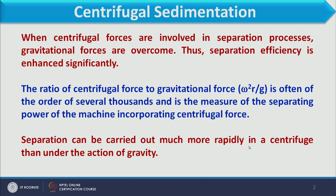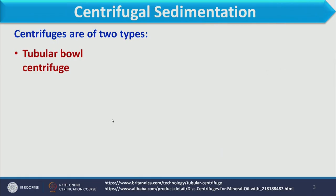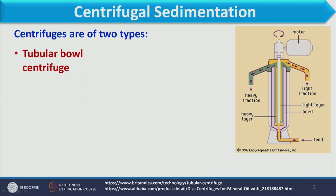Separation can be carried out much more rapidly in a centrifuge than under gravity. Centrifuges are of two types. The first is the tubular bowl centrifuge, shown in the diagram, which has a smaller diameter but significantly high length in comparison to diameter. Feed enters from the bottom and the bowl revolves at very high RPM. The heavier particles, due to centrifugal forces, are collected at the periphery and form a heavy layer.